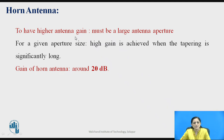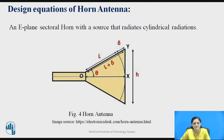Some important properties of the horn antenna: to have higher antenna gain, the horn antenna must have a large antenna aperture. For a given aperture size, it should have high gain when the tapering is significantly long. Generally, the gain of the horn antenna is around 20 dB.